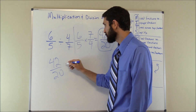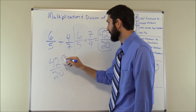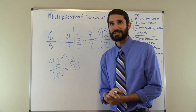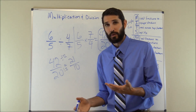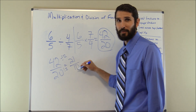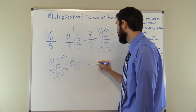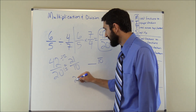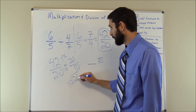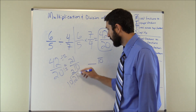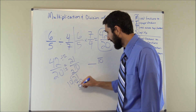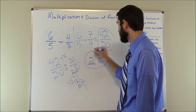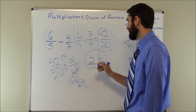We want to simplify forty-two over twenty. The greatest common factor is two: forty-two divided by two is twenty-one, and twenty divided by two is ten, giving us twenty-one over ten. Since that's an improper fraction, we convert back to a mixed number. The denominator carries over as ten. Ten goes into twenty-one two times — two times ten is twenty, with a remainder of one. So our answer is two and one tenth.